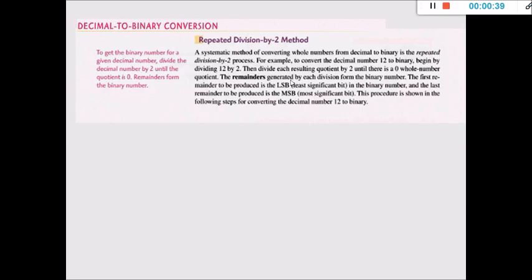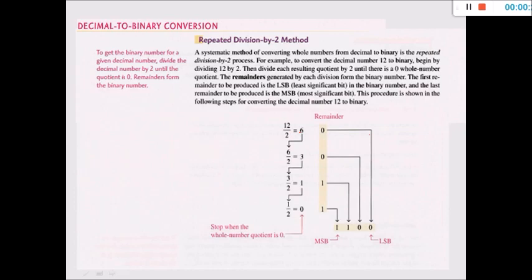For example, converting the decimal number 12 to binary according to this method. We will start by dividing 12 by 2. 12 divided by 2 is equal to 6 and the remainder is 0. The quotient is 6, not 0, so we will continue.